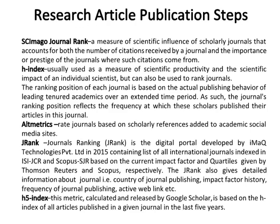Altmetrics rate journals based on scholarly references added to academic social media sites. J-Rank is a digital portal developed by iMac Technologies in 2015 listing all international journals indexed in ISI JCR and Scopus SJR, based on impact factor and quartiles given by Thomson Reuters and Scopus respectively. It provides information on country of publishing, impact factor history, and publishing frequency. H5 index, calculated by Google Scholar, is based on the H-index of all articles published in a given journal in the last five years.